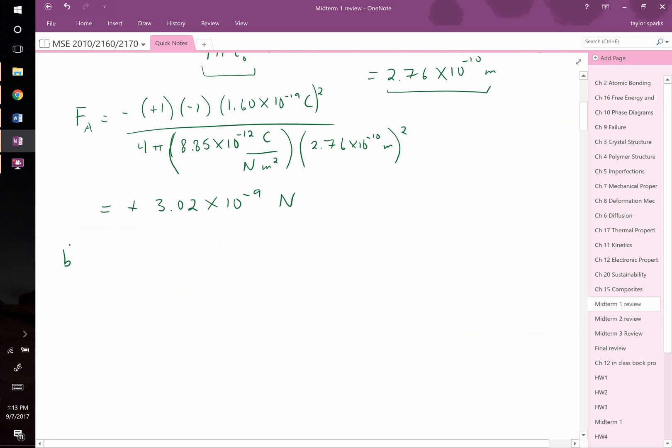First off, if you have an energy term, E net equals EA plus B over R to the 9th, that was R to the N, but they told us that N equals 9. We can figure out what the forces would be by taking the derivative of this expression. Remember that force equals the derivative of energy with respect to interatomic separation dr. So if we take the derivative of this...